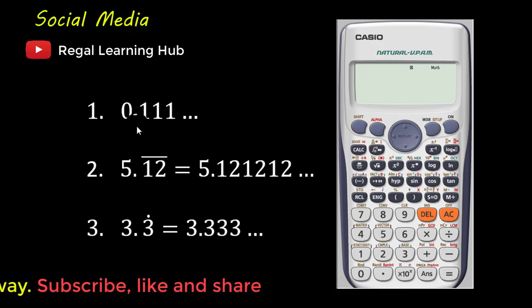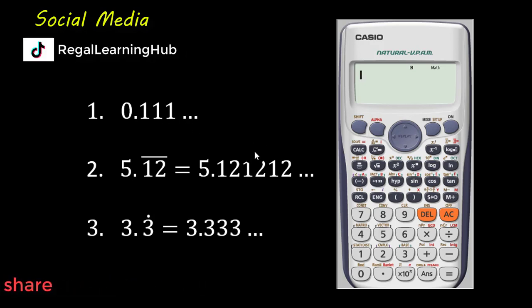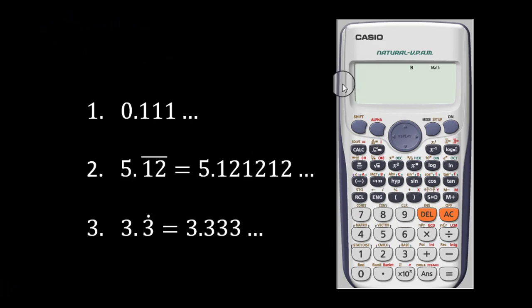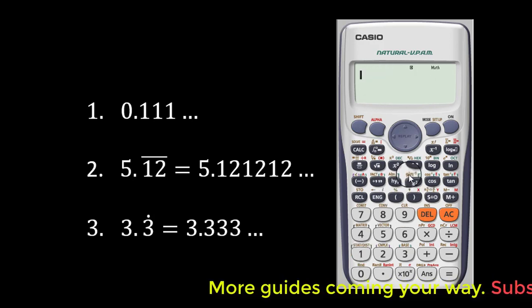Now let's start with the first one. We have 0.111111 going. What you simply have to do is make sure your calculator mode is at the composition mode and of course the math setup. So that is basically what it should be.